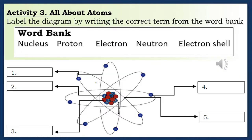Activity 3: All about atoms. Label the diagram by writing the correct term from the word bank: proton, electron, neutron, or electron shell. The answers are: number 1 — electron shell, number 2 — proton, number 3 — neutron, number 4 — electron, number 5 — nucleus.